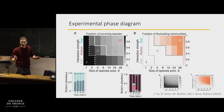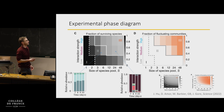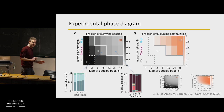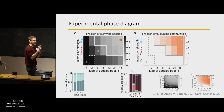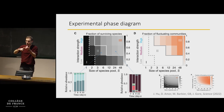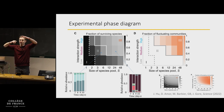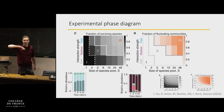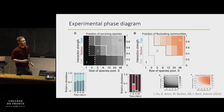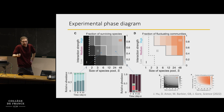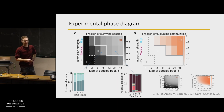There isn't quantitative agreement between the simulations and the experimental data — there absolutely isn't. What there is is agreement in the order of the phases and where they are, how they're organized in phase space. That's the level at which we hope to find agreement, and that's what we're showing here.